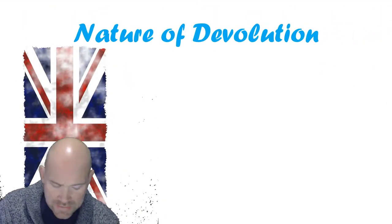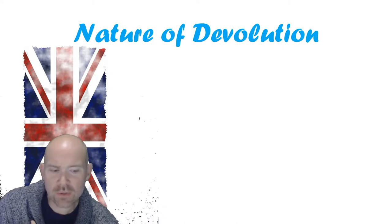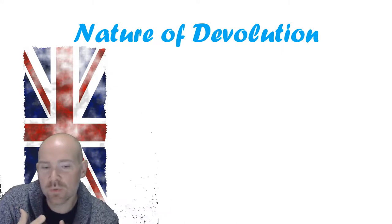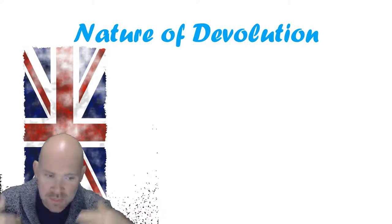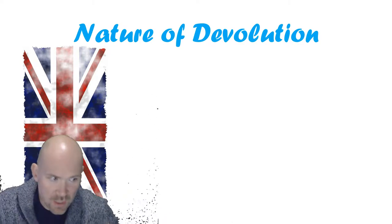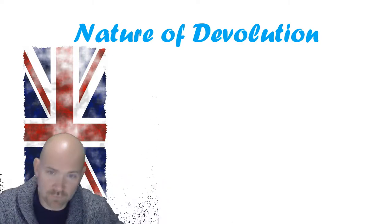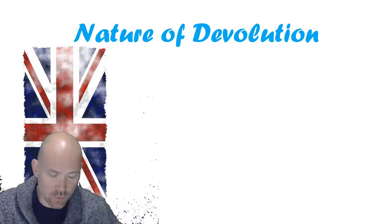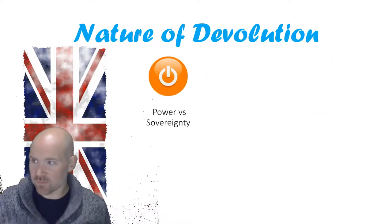So what exactly is devolution? Why do we not use the word federalism? Because in America, we use the word federalism and we talk about a federal system. But in the UK, we talk about a devolved system or devolved power. What's the difference?